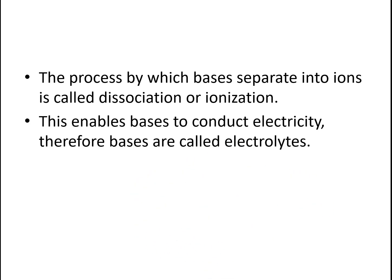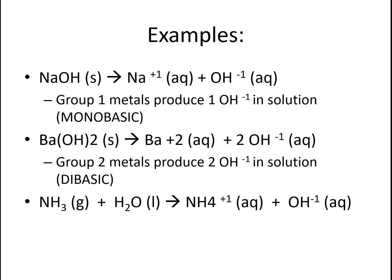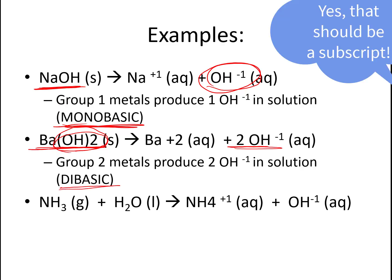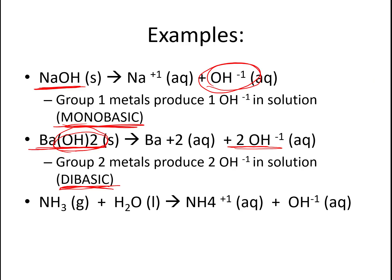In acids we had monoprotic, diprotic, triprotic. We have something similar in bases. With bases, group one metals, because they can only attach to one OH group, only release one OH group—they are called monobasic. Sometimes you might hear this referred to as monohydroxy. Here we have a group two metal with two hydroxides attached. That means it would be dibasic because it releases two OHs. Our ammonia would also be monobasic because it results in the release of one hydroxide ion.